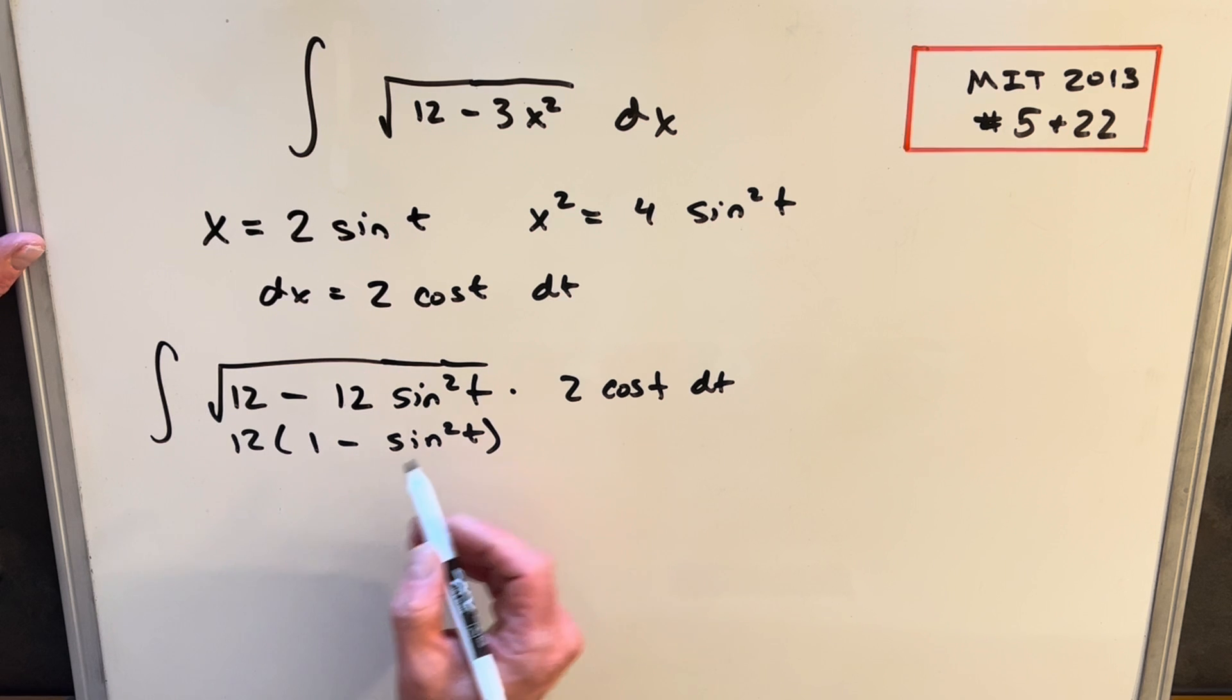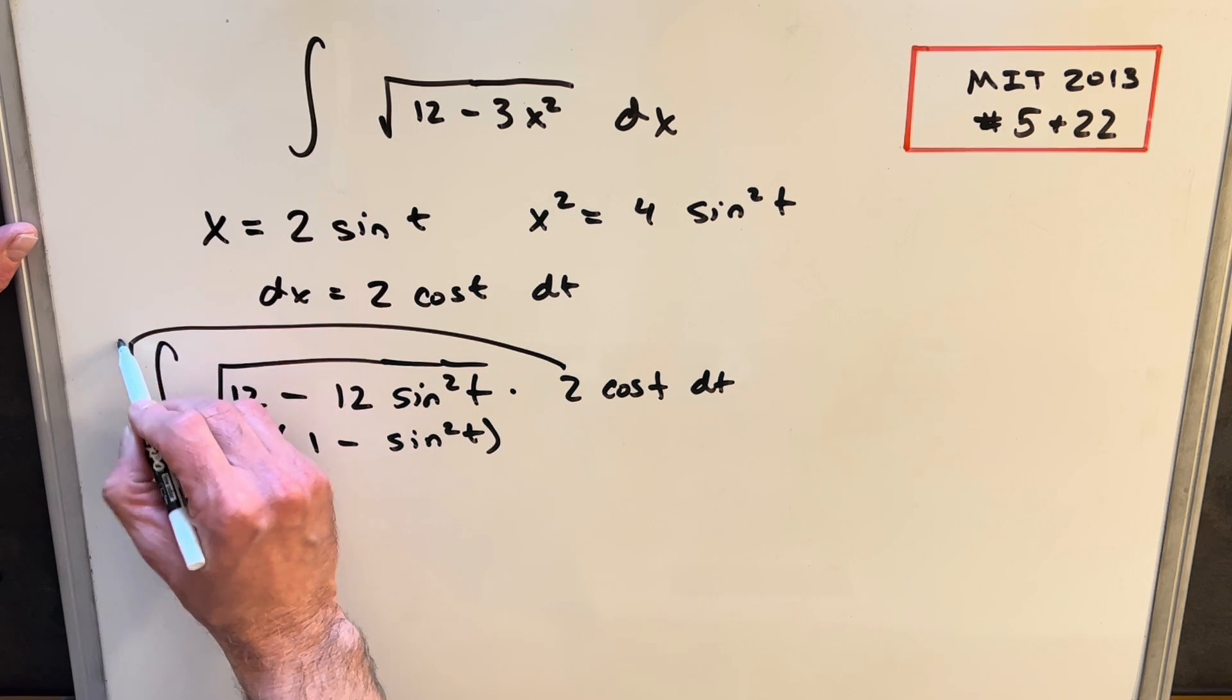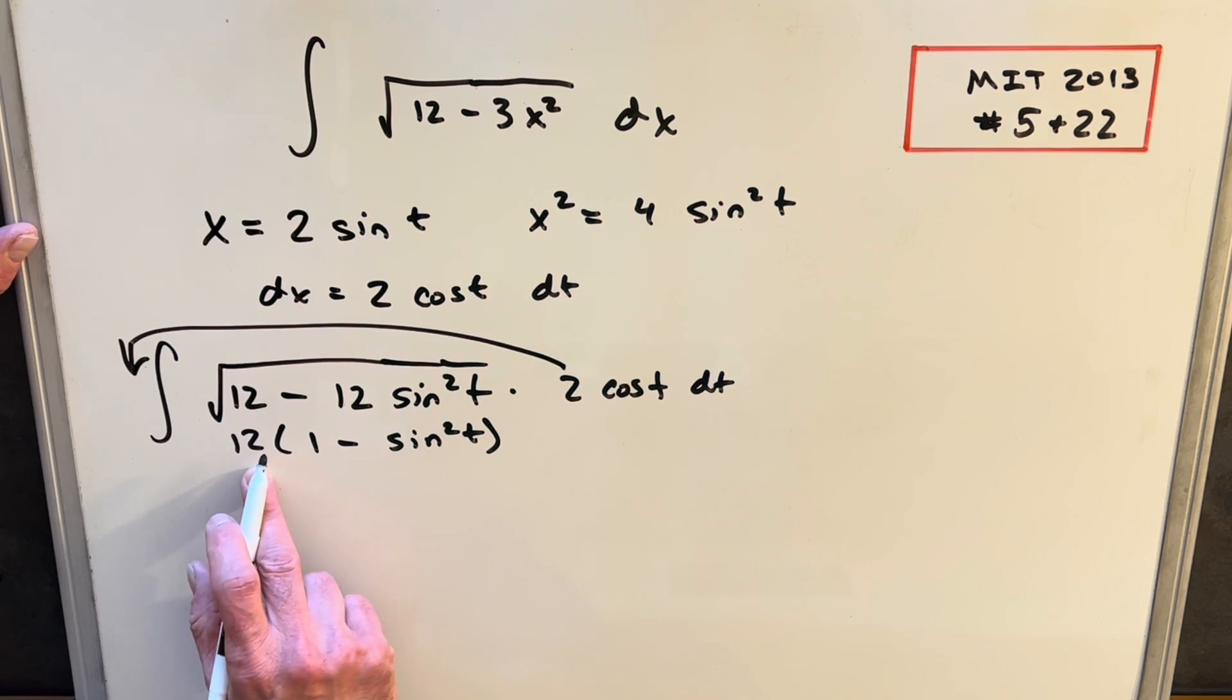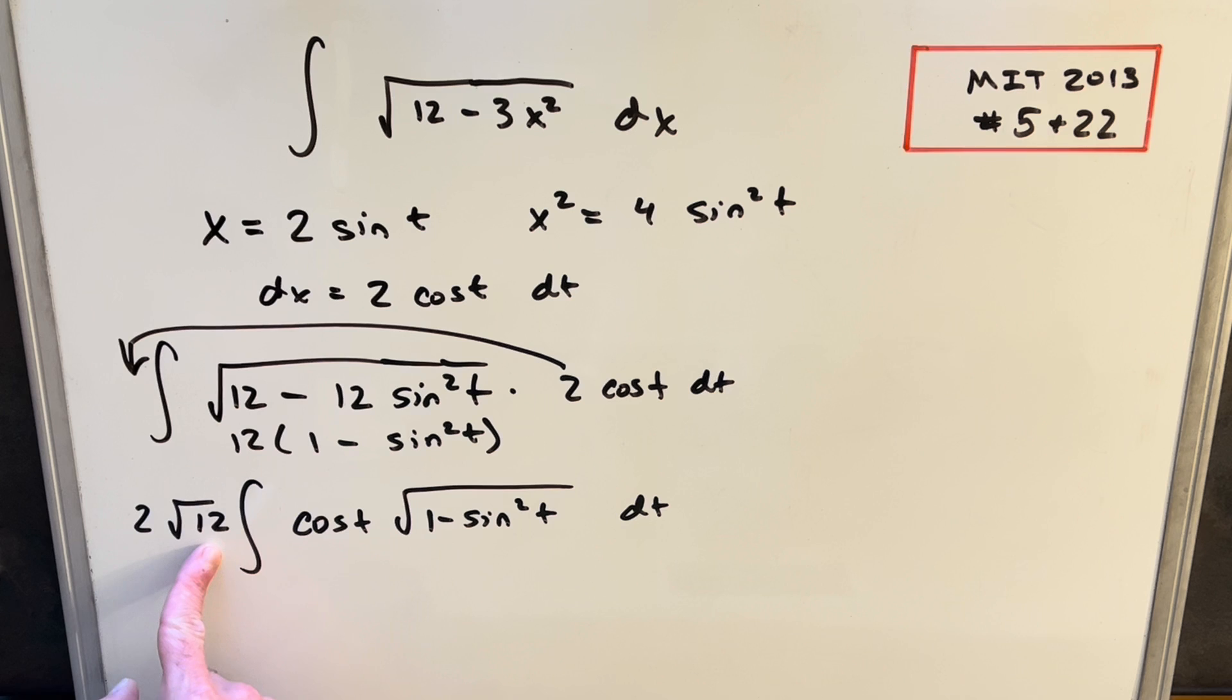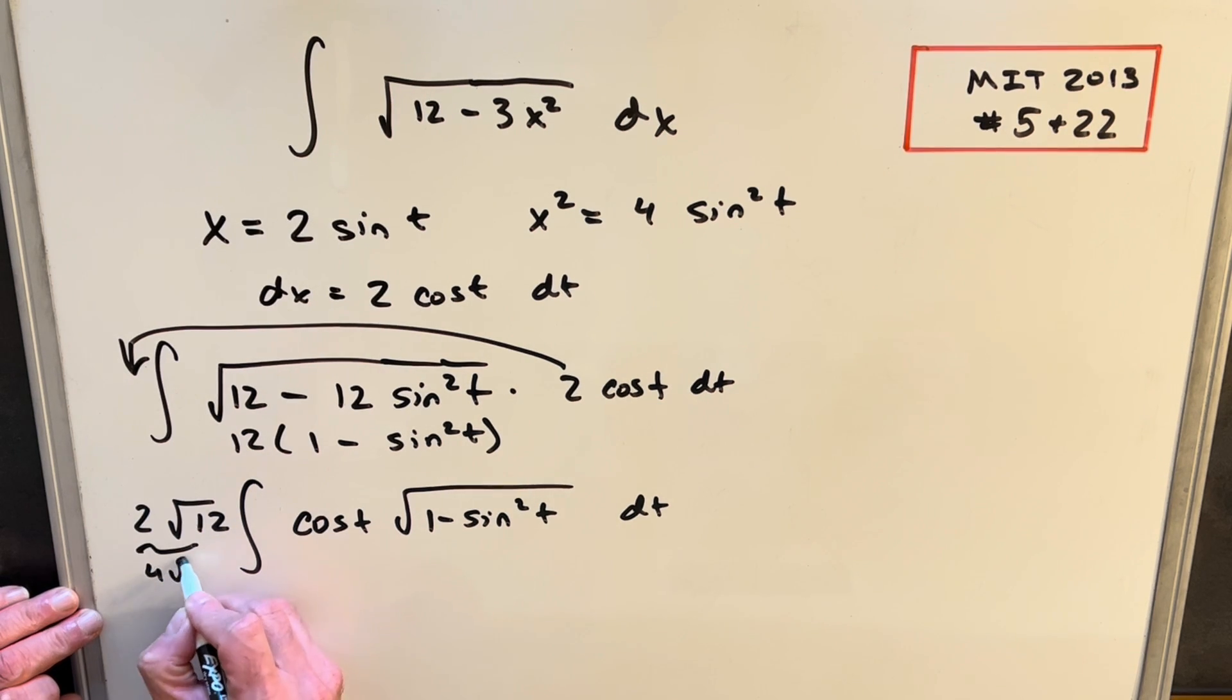But then when I rewrite this, what I'm going to do, we'll bring a 2 in front of the integral. And then I'm also going to take out this 12, so we'll bring this out as a square root of 12. Then next from our square root of 12, we could take a 4 from that. So the square root of 4 is going to be another 2. So we can write this as 4 square root of 3.